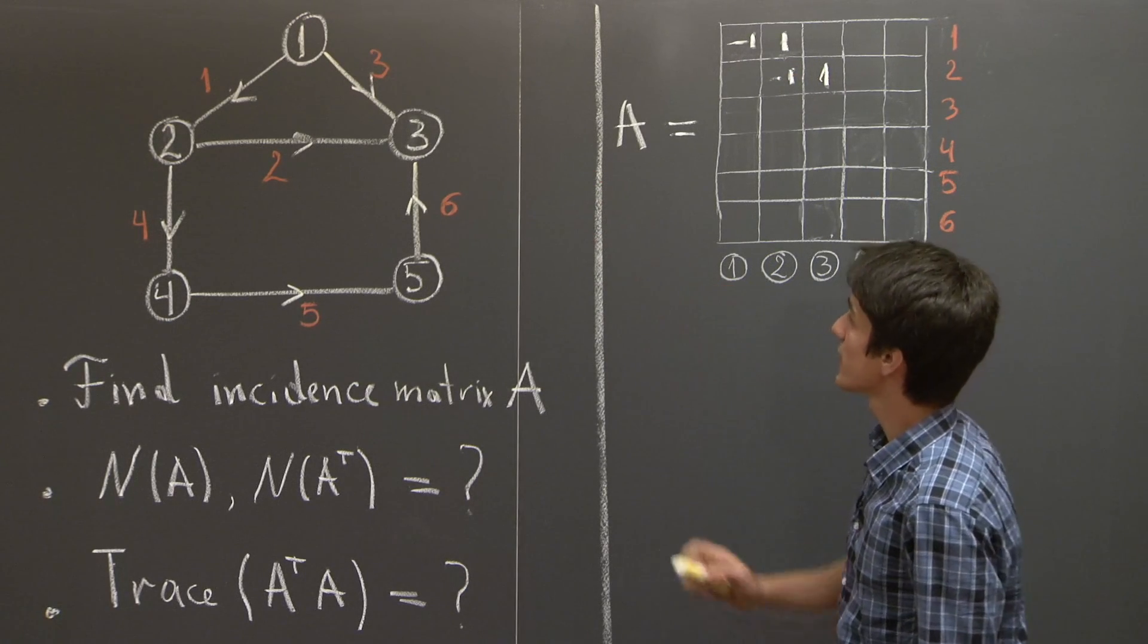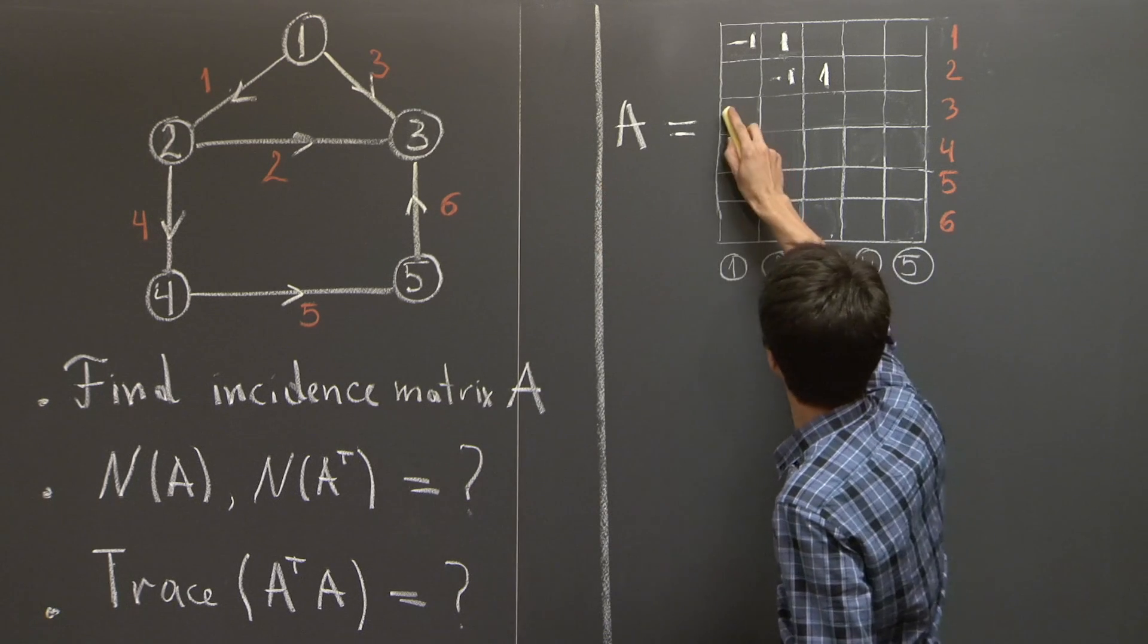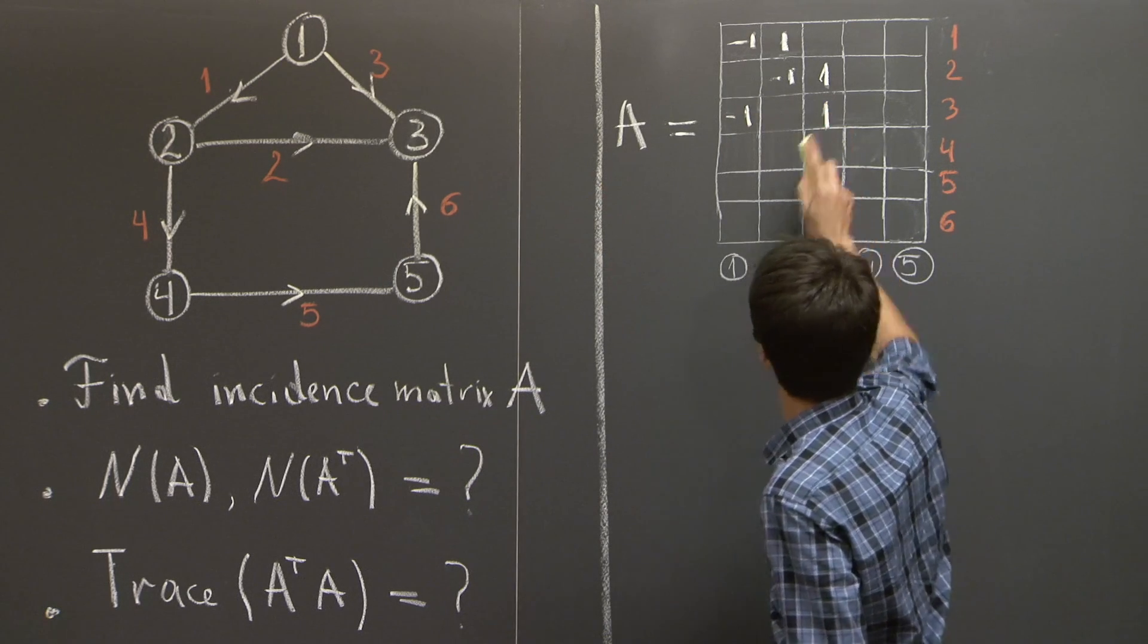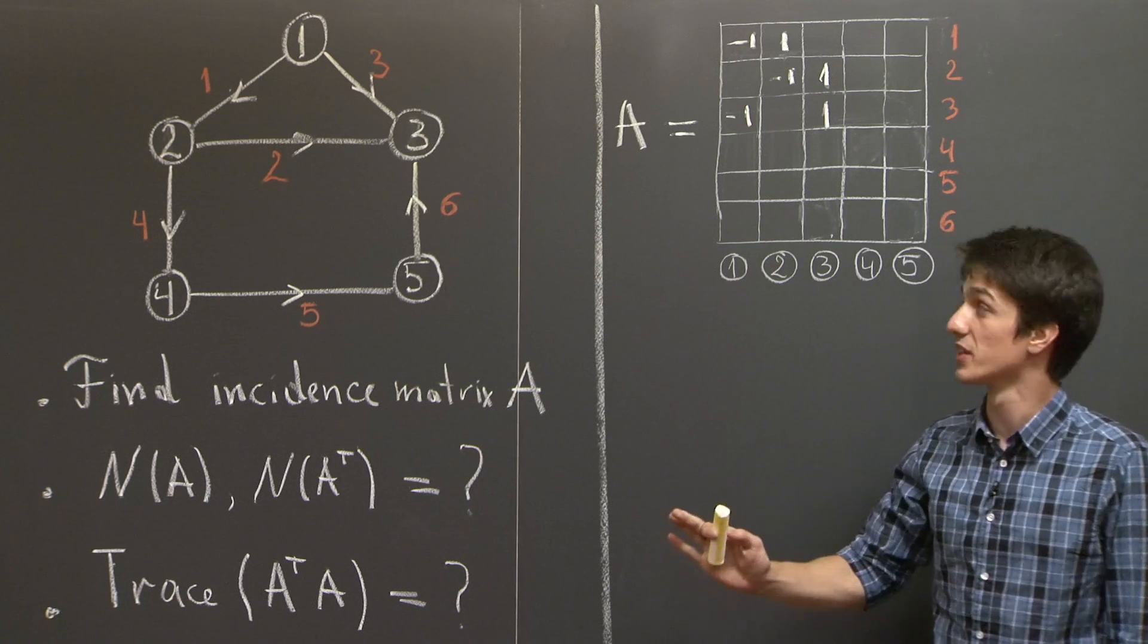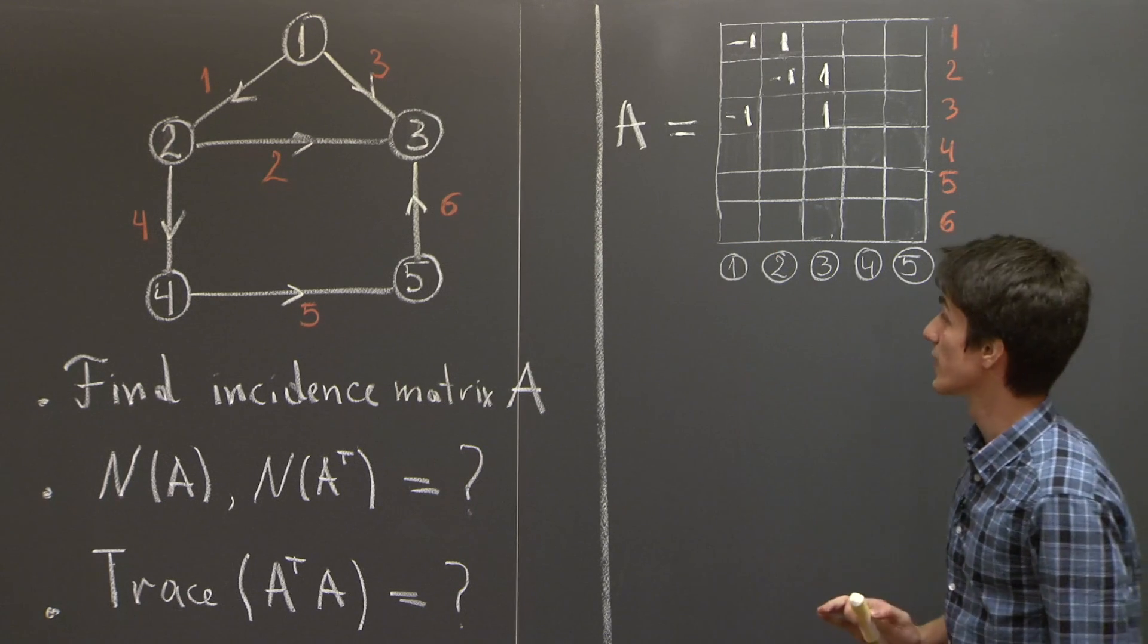Edge number 3 connects node 1 to 3, so negative 1, 1. And I believe you get the picture, right? So I'm just going to fill out the rest of the entries.